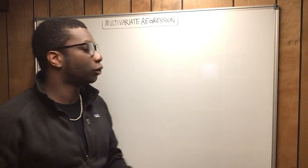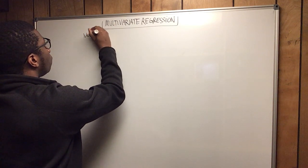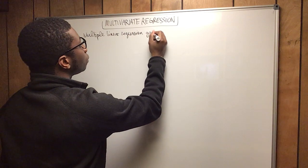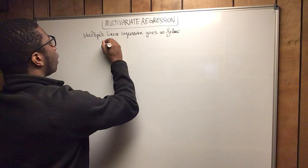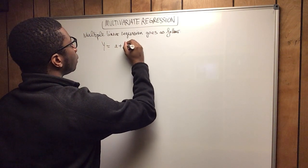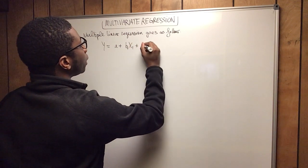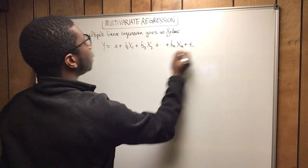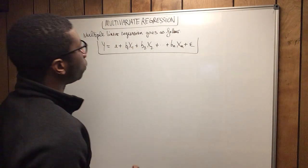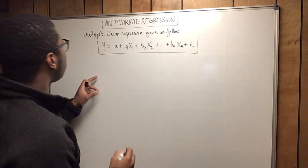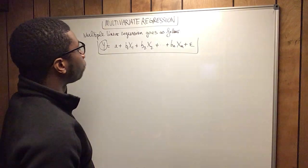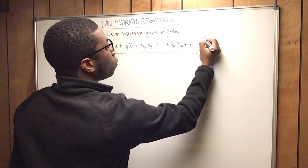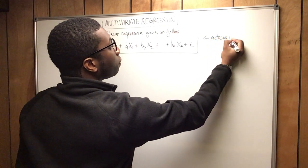So in this video I'm going to first tell you the difference between the two and then show you the basics of the multivariate regression. Let's start with the multiple regression. The multiple linear regression goes as follows: y equals a plus b1*x1 plus b2*x2 plus bn*xn plus epsilon. The particularity of the multiple linear regression is that you only have one outcome variable, and this outcome variable depends on many predictors — two or more predictors.